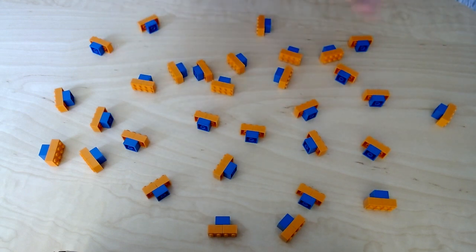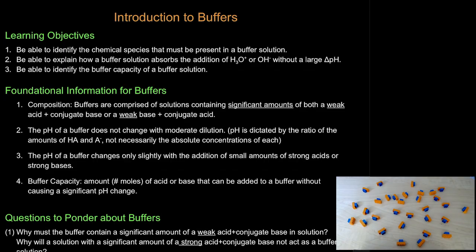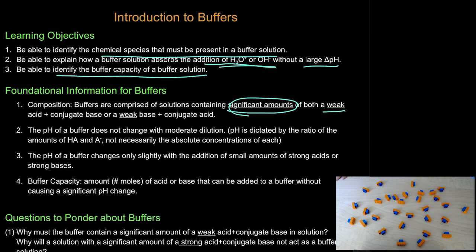Now we want to connect this to buffers. We'll look at how to identify what must be present in a buffer solution, how it absorbs hydronium or hydroxide ions without a large change in pH when they're added, and what the buffer capacity of a solution is. First, buffers must contain a significant amount of both a weak acid and its conjugate base, or a weak base and its conjugate acid.